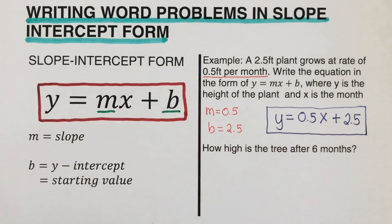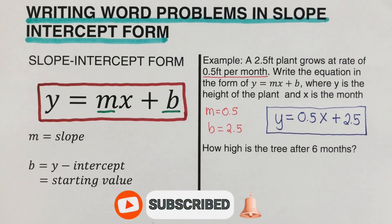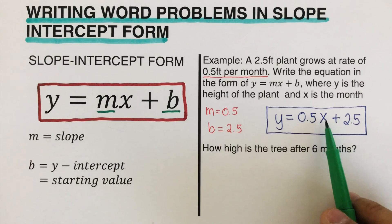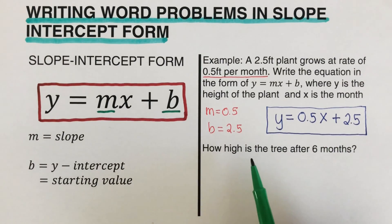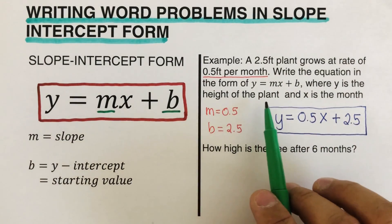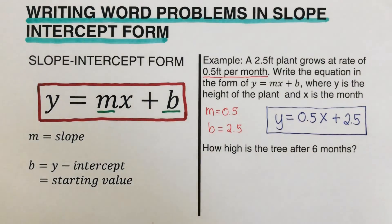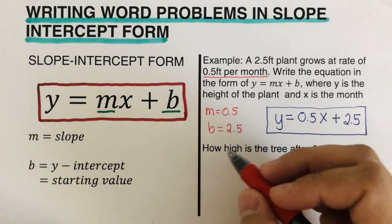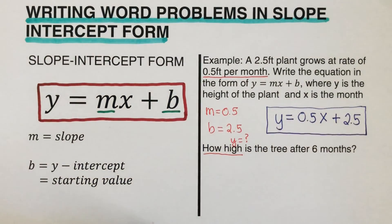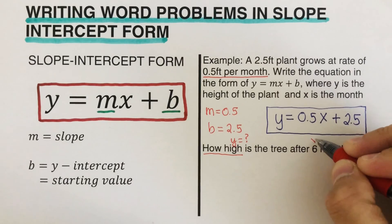From this equation, the problem asks: how high is the tree after six months? We need to determine what we are looking for. There are two variables: y and x. Since y is the height of the plant and x is the month, the problem is asking for the height, so we are looking for y — y is missing. And since x is the month, the 6 is our x value.